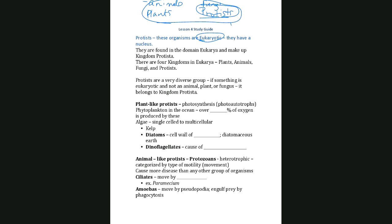If it's not an animal, not a plant, not a fungus, but has a nucleus, it gets put in the protist category — which means there's a lot of diversity. Many protists are single-celled microscopic organisms, but some are multicellular. For this class, I want you to look at protists in three general categories: plant-like protists, animal-like protists, and fungi-like protists.